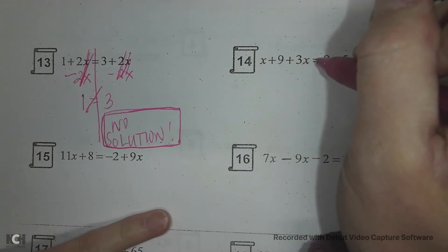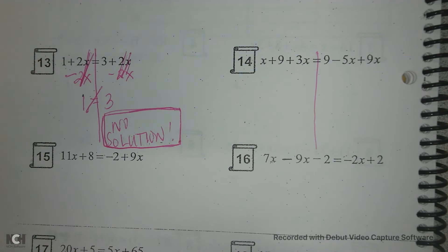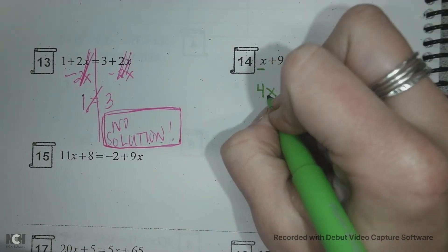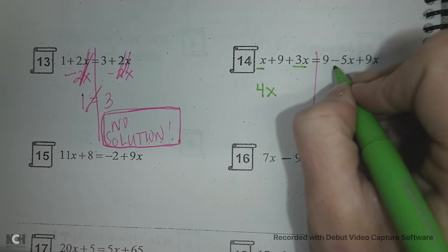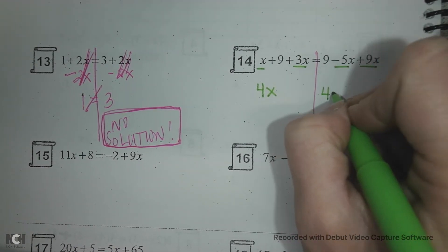Okay, let's look at 14. On 14, I'm going to combine my like terms. On the left hand side, I have 1x and 3x makes 4x's. And on the right, negative 5 and 9 make 4x's.